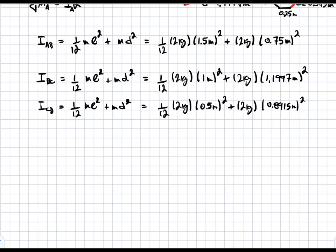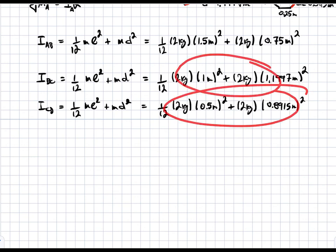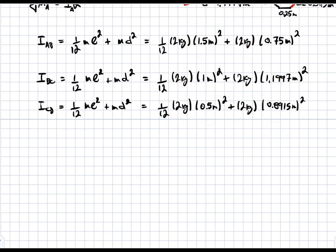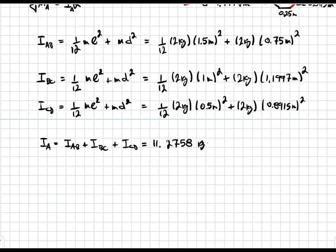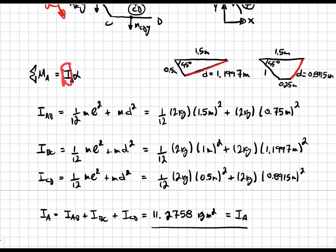Once we have all three moment of inertia terms, we add them up to get the total I_A. So I_A = I_AB + I_BC + I_CD = 11.2758 kg·m².